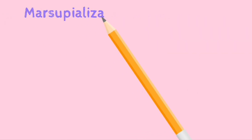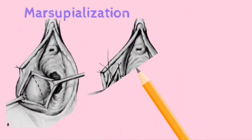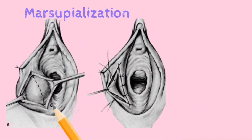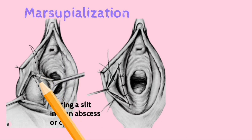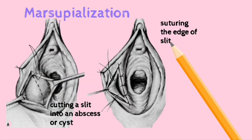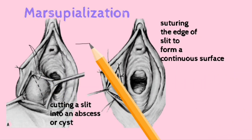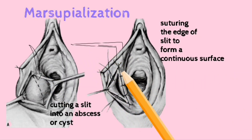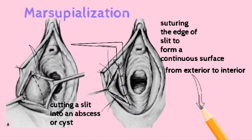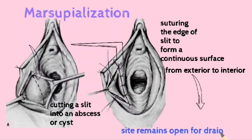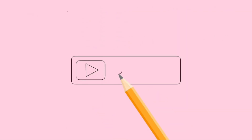The treatment option is marsupialization — cutting a slit into the abscess or cyst, then suturing the edges of the slit to form a continuous surface from exterior to interior, so that the site remains open to drain freely.